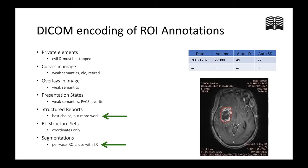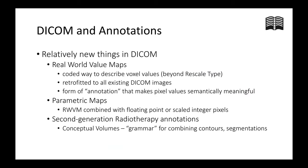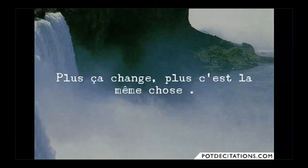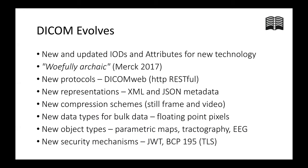We've been extending the standard over the years to add various different formats specific to different kinds of parametric imaging, heat maps, and annotations at the raster level and the contour level. There are a bunch of different ways to encode ROIs, and we believe that structured reports and segmentations are the best way to do that nowadays, with the exception of RT structure sets, which obviously have high uptake in the RT community. We also have real-world value maps, parametric maps particularly useful for heat maps to superimpose on structural images, second-generation radiotherapy annotations with conceptual volumes, fiducials, rigid and deformable registration, and tractography — all encodable in DICOM.